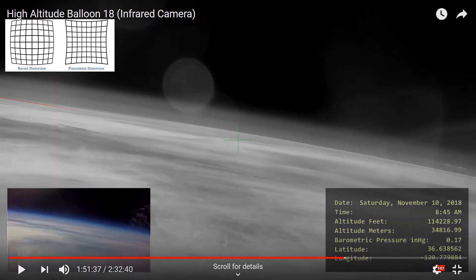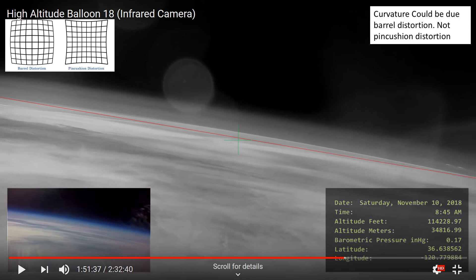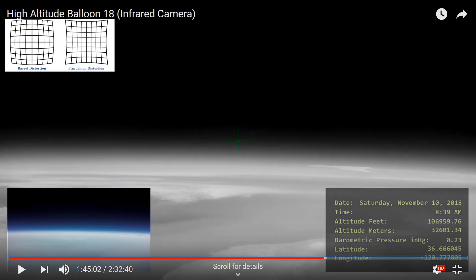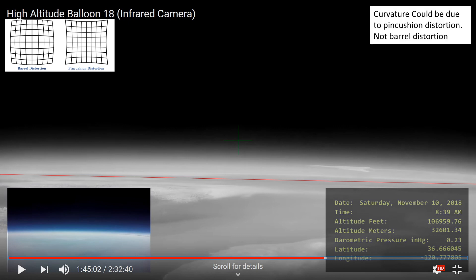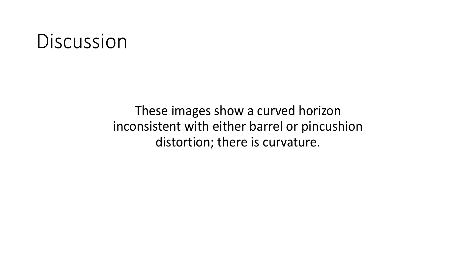The main point is that we can clearly see curvature in this video. We can also conclude that the curvature cannot be attributed to either barrel or pin cushion distortion because they're not consistent. This leaves only one conclusion.